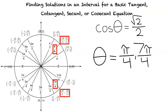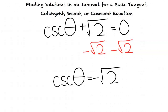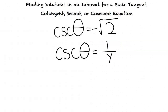Now that we've gone through tangent, cotangent, and secant equations, let's work through a cosecant problem. For our final example, we will use the cosecant equation: cosecant theta plus square root of 2 equals 0. For the first step, we subtract square root of 2 from both sides to isolate cosecant theta, giving cosecant theta equals negative square root of 2. Since cosecant equals 1 over y, we need to find a 1 over y value equal to negative square root of 2 on the unit circle.